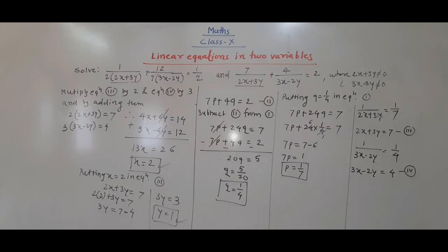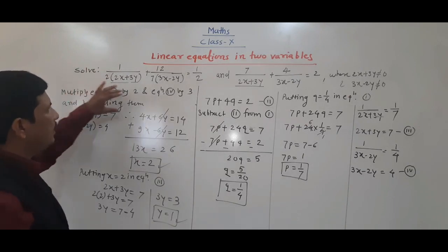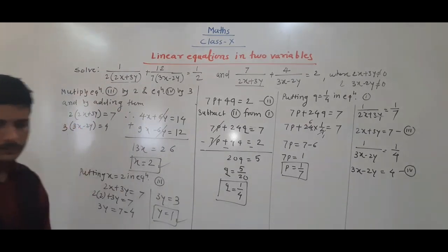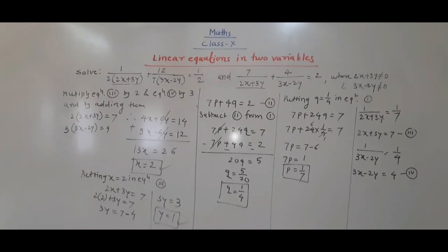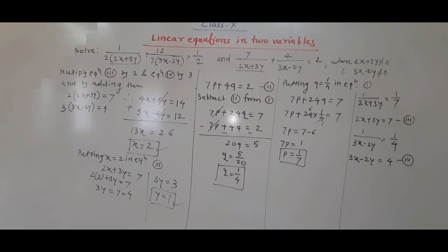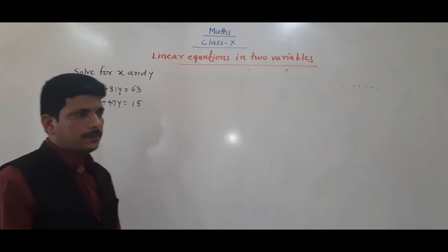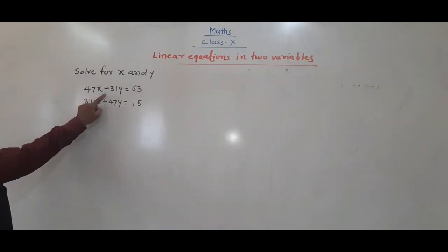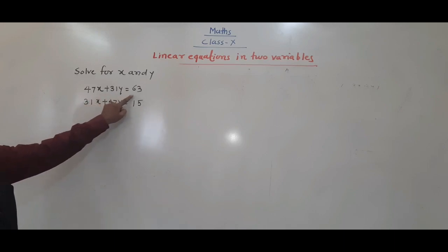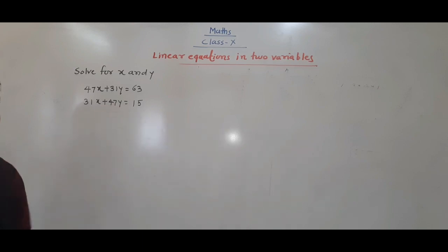See carefully, the same approach we have done — only by assuming the common factor as p and q. Our second example is: solve for x and y. 47x + 31y = 63 and 31x + 47y = 50.